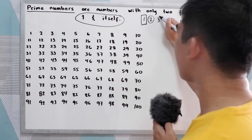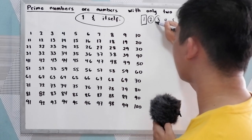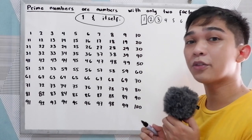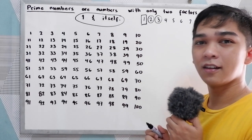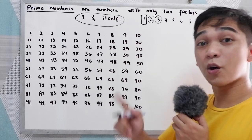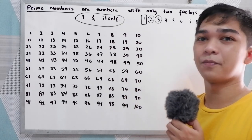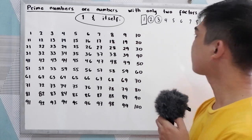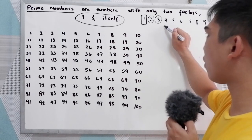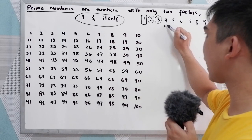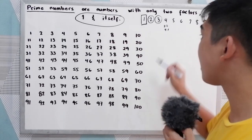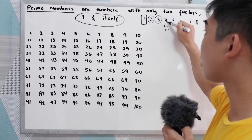Our second prime number is three, because the factors of three are one and itself only — one and three. Four has factors: two times two, or four times one. That means it is not a prime number. It is a composite.